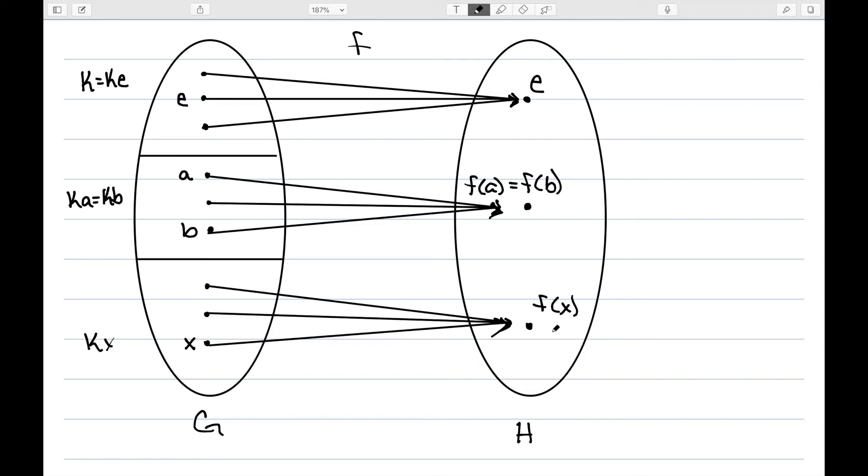This means there's a one-to-one correspondence matching between cosets of K and elements of H. So now I only need to show that this one-to-one correspondence is an isomorphism. First, I need to know how exactly does this correspondence match up specific cosets of K with specific elements of H. Well, for every coset KX, we're going to match it with the element F(X).